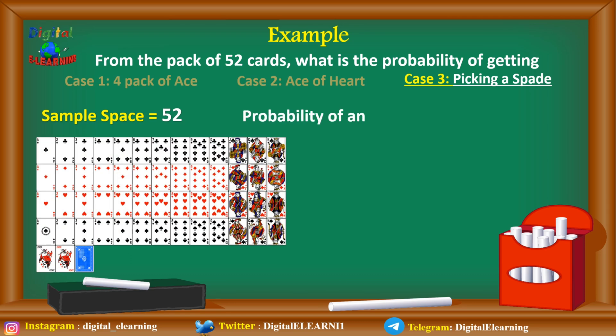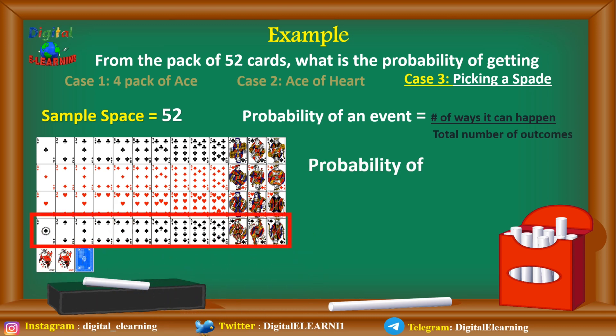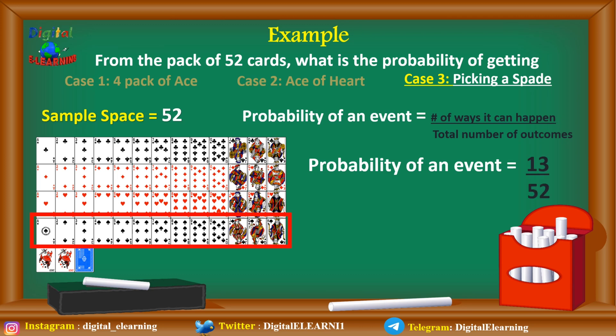For the third case — picking a spade — the sample space is again 52. There are 13 spade cards in a pack of 52, so the probability is 13 divided by 52, which comes to 25 percent.